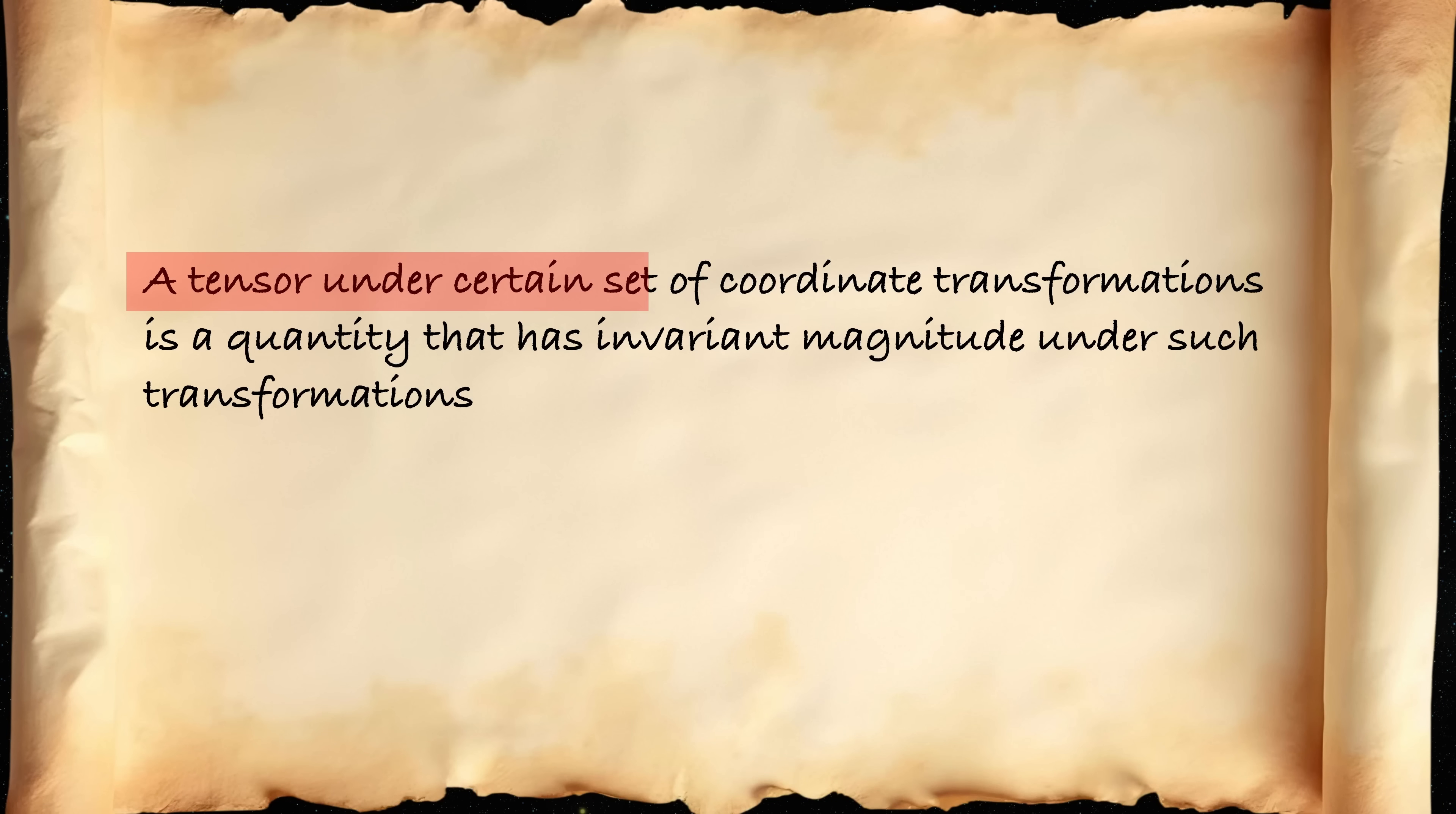So now I'm going to tell what tensor is, so that it's sensible for physicists. So, mathematicians, cover your ears. A tensor under a certain set of coordinate transformations is a quantity that has invariant magnitude under such transformations. So what does it mean?